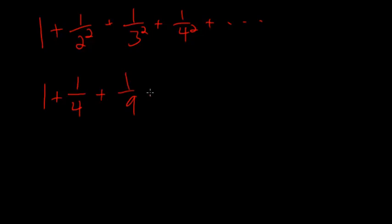1 plus 1 over 2 squared plus 1 over 3 squared plus 1 over 4 squared. And I think you get the general idea, and actually if I write these squares out, it'd be 1 plus 1 4th plus 1 9th plus 1 16th plus 1 25th, and it just keeps going.